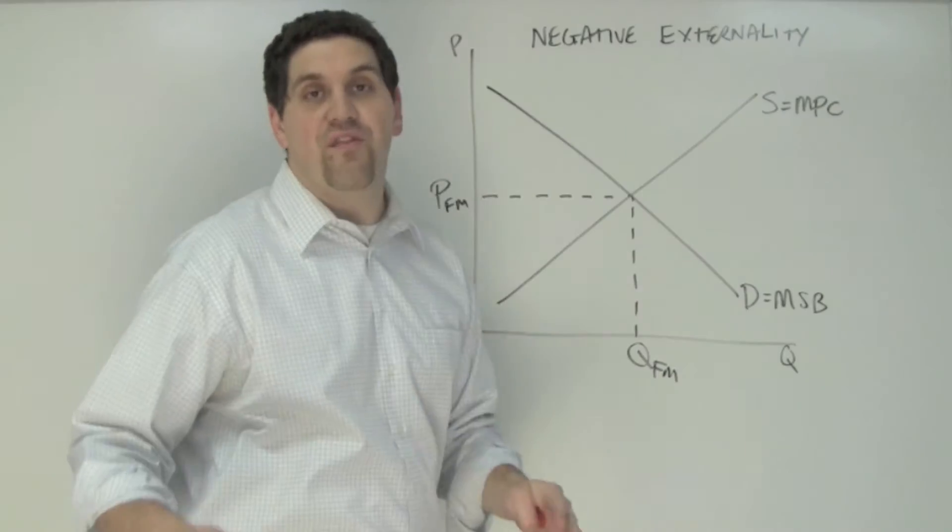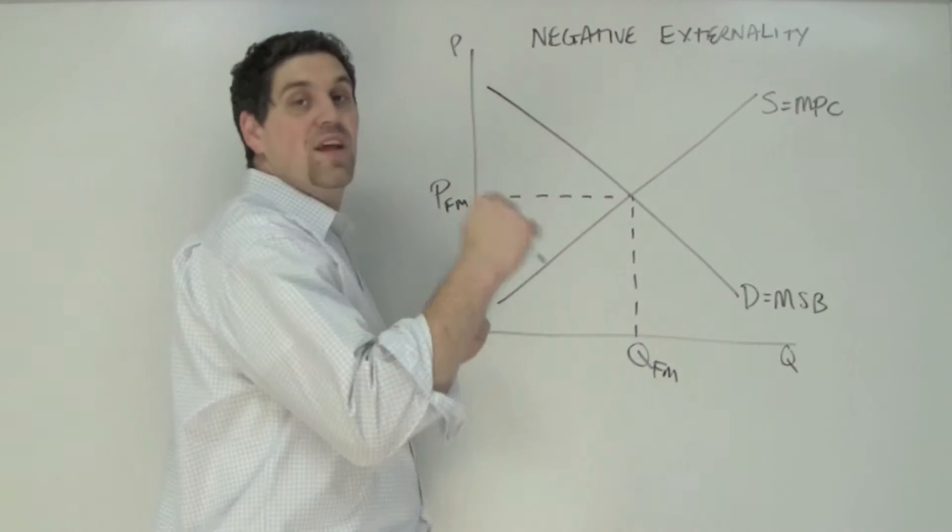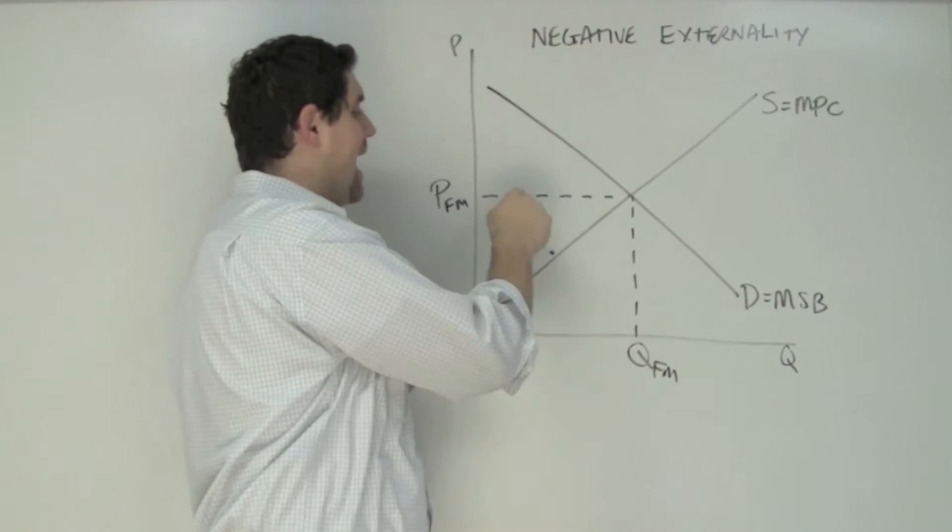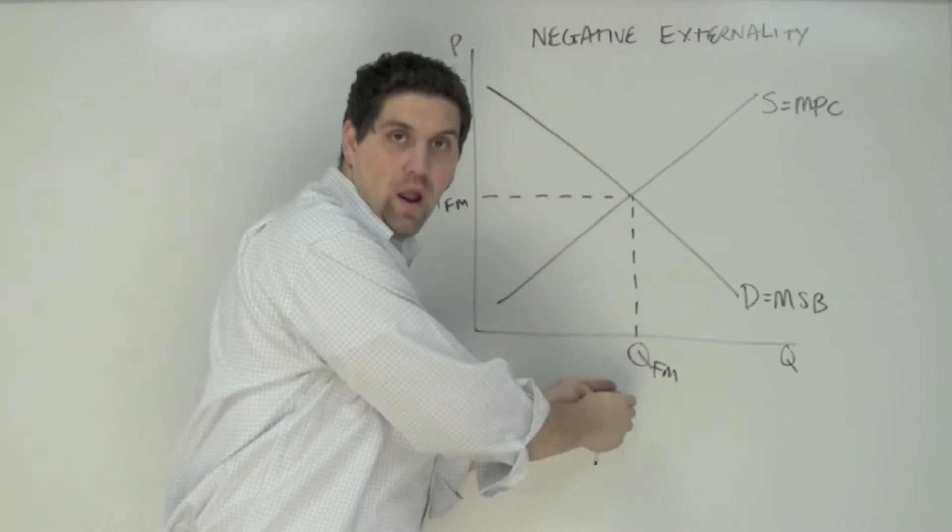The negative externality. In the free market, the price would be right here and the quantity would be right here. Consumer surplus is the difference between what people are willing to pay and what they actually did pay. So this triangle right there is consumer surplus if they're going to produce that quantity.